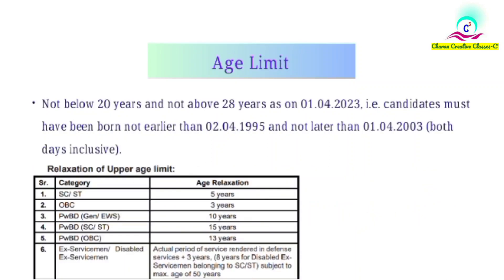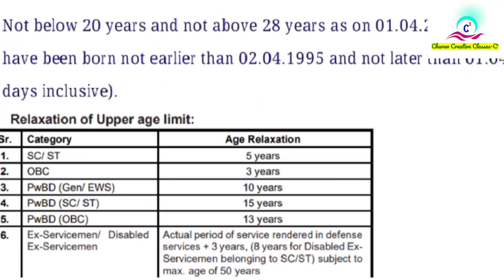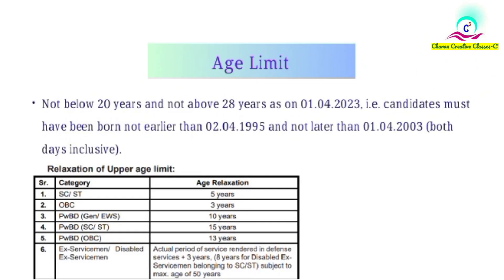Next is the age limit. The minimum age is 20 years and the maximum is 28 years, with the date of birth year ranging from 1995 to 2003. Regarding age relaxation: SC/ST candidates get 5 years, OBC gets 3 years, general physically disabled persons get 10 years, SC/ST physically disabled persons get 15 years, and OBC physically disabled persons get 13 years.